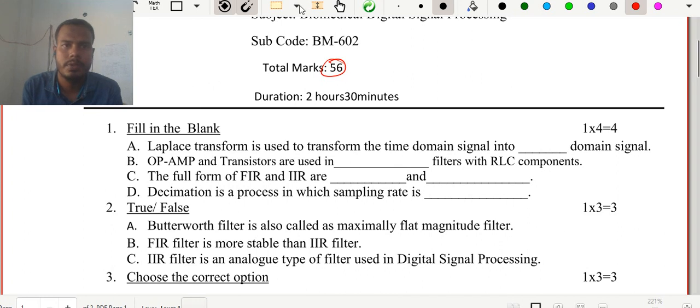First of all, the first question is fill in the blank. The question says Laplace transform is used to transform the time domain signal into frequency domain signal. So we basically convert a signal x(t), which is a time domain signal, into x(s). Here x(s) is nothing but the Laplace transform. This is the Laplace transformation operation from time domain to frequency domain.